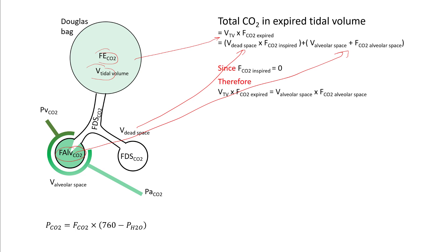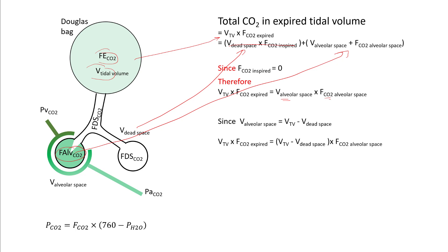Since your CO2 in the dead space is zero, your equation simplifies to: tidal volume multiplied by CO2 in the expired air equals the volume of the alveolar space multiplied by the amount of CO2 in your alveolar space. And since your alveolar volume is nothing but tidal volume minus dead space, you can get to the next step of the equation.